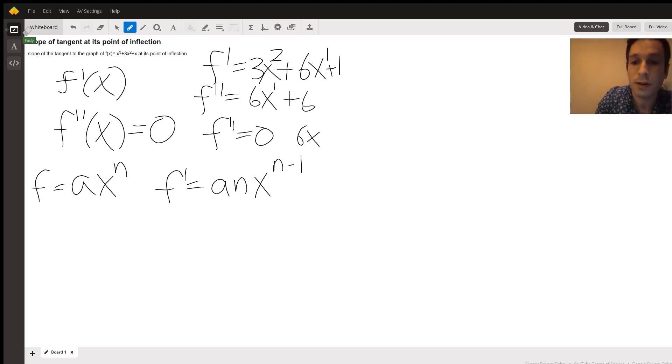Six x plus six equals zero. And so what value will that be? Well, we can subtract six and then divide by six, so it's going to be negative six over six equals x, so that's negative one.